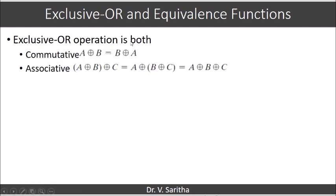The Exclusive OR operation is both commutative and associative. Commutative means the position of variables can be interchanged: a XOR b = b XOR a. Associative means (a XOR b) XOR c = a XOR (b XOR c), so brackets can be removed and we simply write a XOR b XOR c.